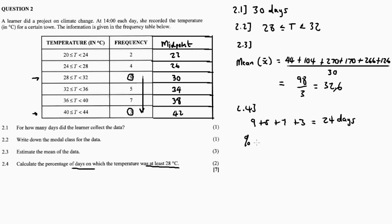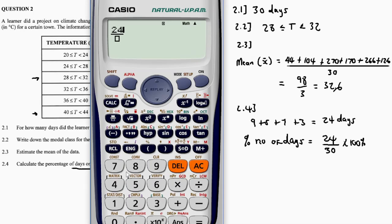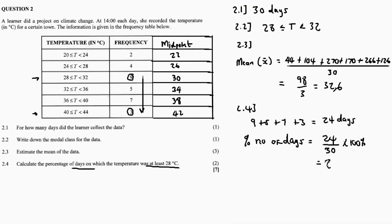To find the percentage, we calculate 24 divided by the total number of days, which is 30, then multiply by 100 percent. That gives us 24 divided by 30 times 100, which equals 80 percent. So the answer for 2.4 is 80 percent — for 80 percent of the days the learner conducted the project, the temperature was higher than or equal to 28 degrees.